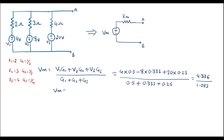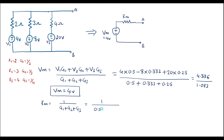The numerator works out to 4.336 and the denominator is 1.083. Solving this gives Vm = 4 volts. Now let me calculate Rm. Rm is given by the formula Rm = 1 / (G1 + G2 + G3) = 1 / (0.5 + 0.333 + 0.25) = 1 / 1.083. Taking the reciprocal gives Rm = 0.923 ohms. Thus we have found Millman's voltage Vm = 4V and Rm = 0.923Ω.